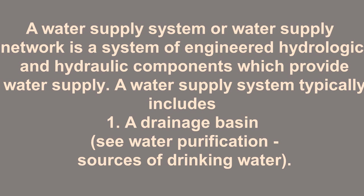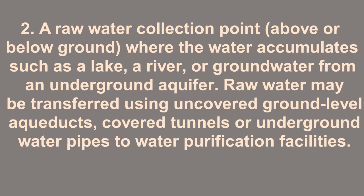A water supply system typically includes, first, a drainage basin and seawater purification sources of drinking water, to a water collection point above or below ground where the water accumulates, such as a lake, a river, or groundwater from an underground aquifer.